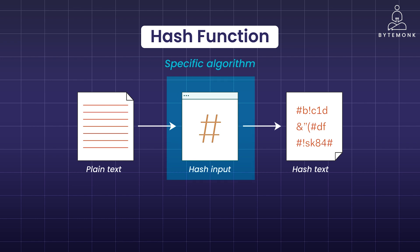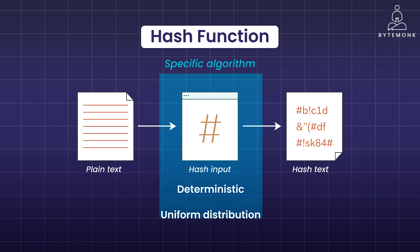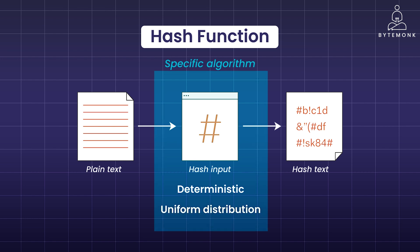Good hash functions have these properties: they are deterministic, meaning the same input always produces the same output; they have a uniform distribution, meaning hashes are spread out evenly across the range of possible values; and they are collision resistant, meaning it is very difficult for different inputs to produce the same hash. But even with collisions, hash tables are still much faster than searching through millions of books one by one, making them fantastic data structures for storing and retrieving data efficiently.